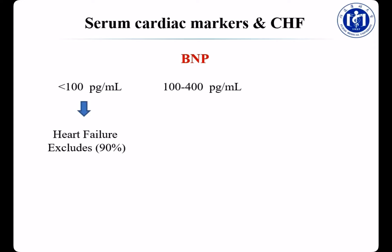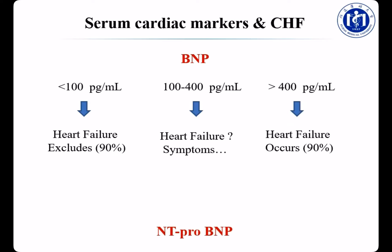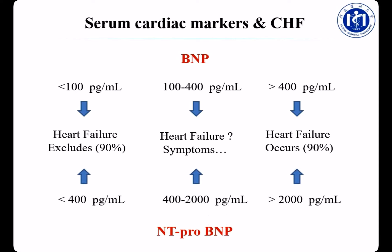Finally, let's see how to use cardiac markers to diagnose CHF. Helpful tests include X-ray, ECG, echocardiogram, and laboratory tests including BNP and NT-proBNP. If the BNP level is less than 100 pg/mL, 90% of patients do not suffer from CHF. If BNP is between 100–400 pg/mL, the patient may have CHF and the doctor should combine clinical symptoms to make the diagnosis. If BNP is over 400 pg/mL, 90% of patients are suffering from CHF.